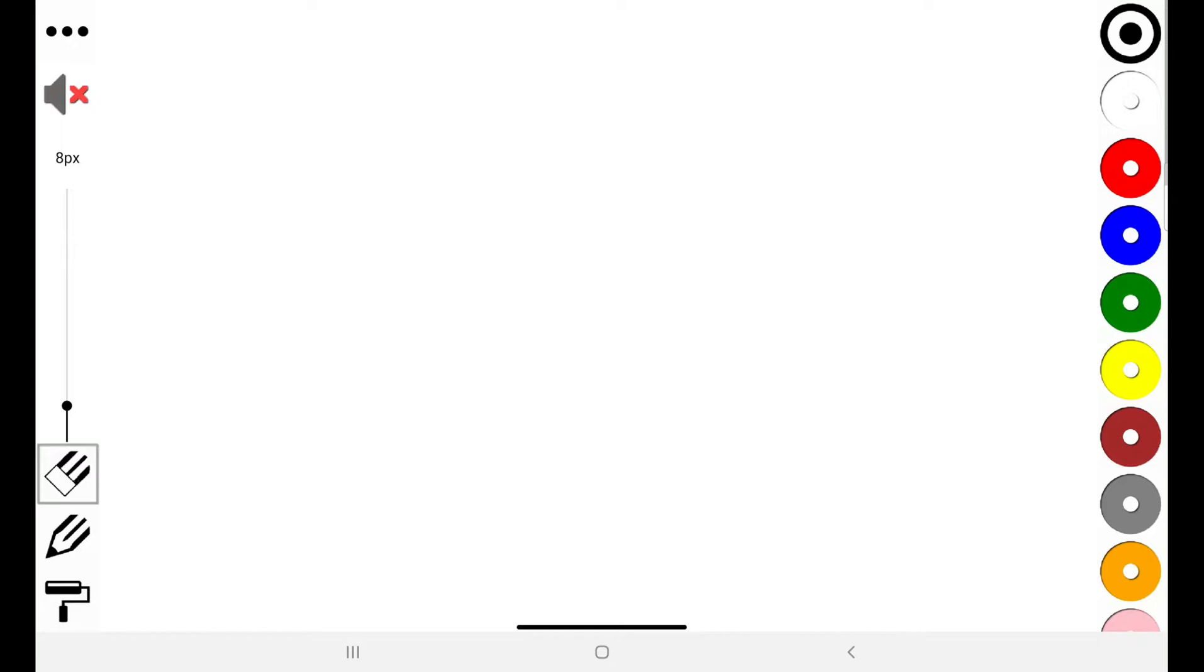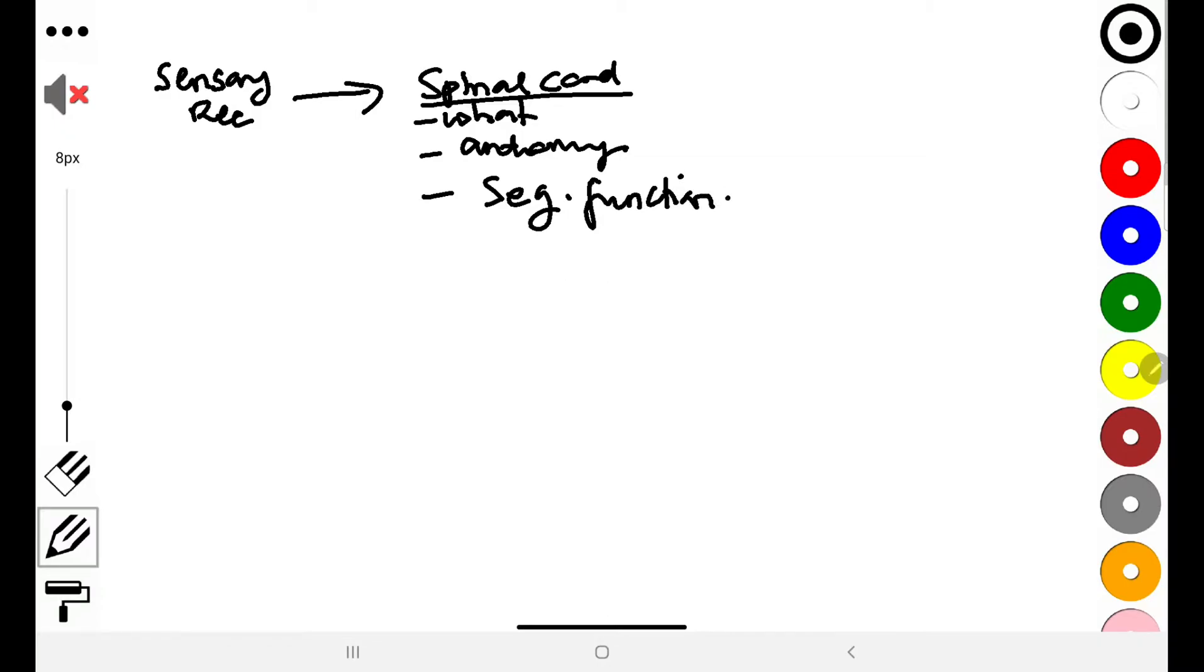What we will be concentrating on is the fact that for somatosensation to take place, we have the sensory receptors, and then from the sensory receptors we go to the spinal cord. We'll appreciate what is happening in the spinal cord. First of all, what is the spinal cord? We'll look at a brief anatomy and then we'll try to understand the segmental function.